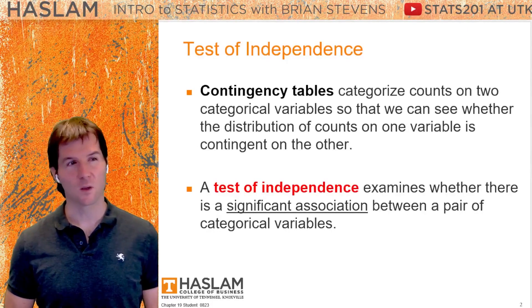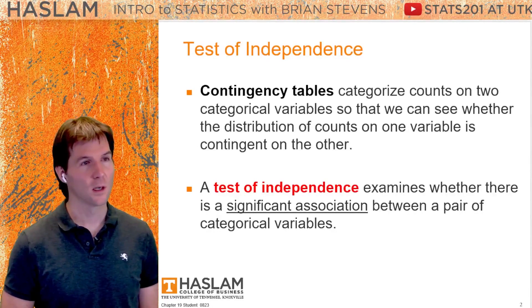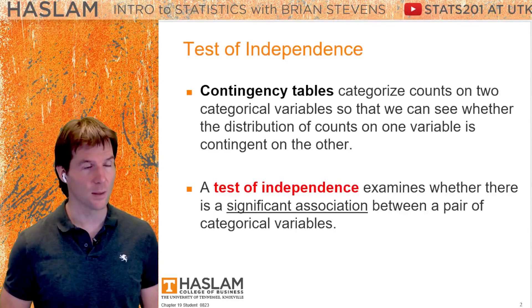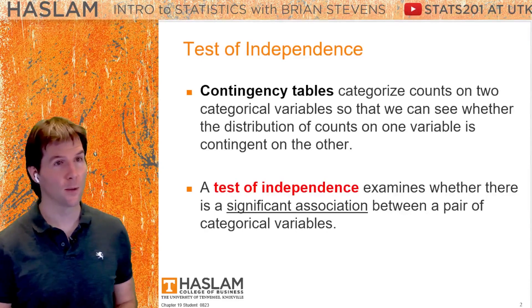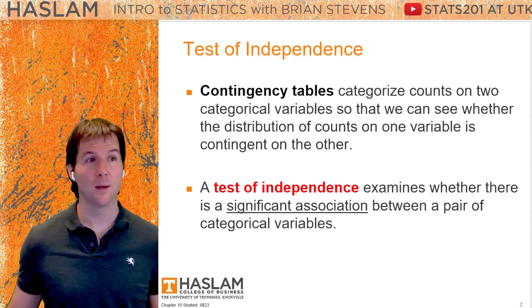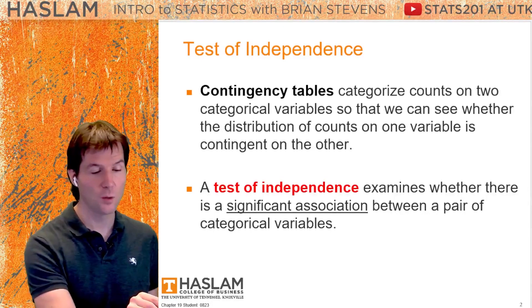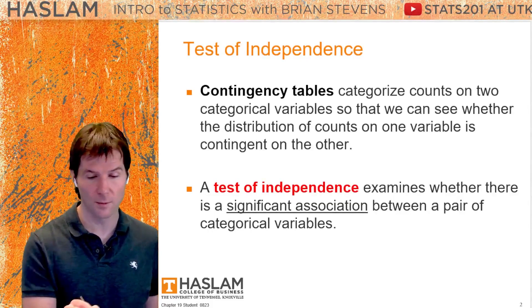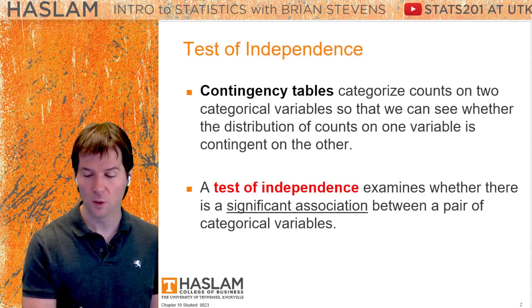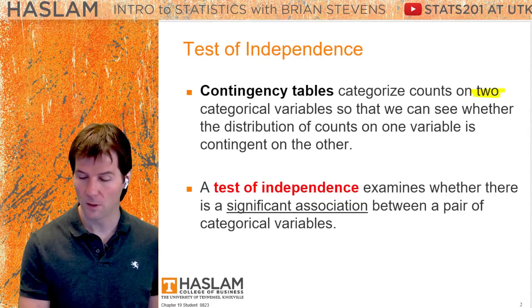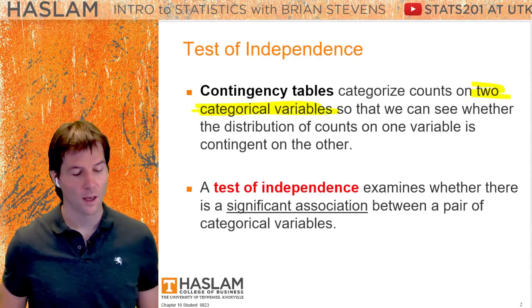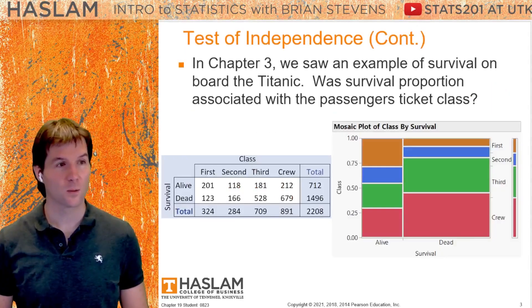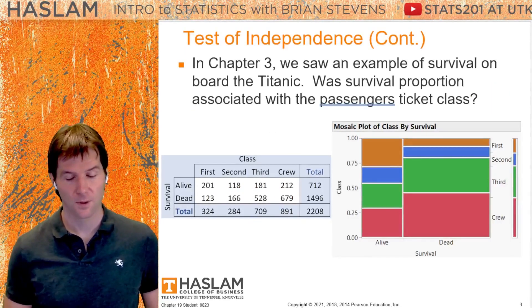We've done things like this previously, where we've looked at a contingency table. A contingency table is the bivariate combination of two categorical variables — we need two categorical variables to make a contingency table — and oftentimes we display this with a mosaic plot.